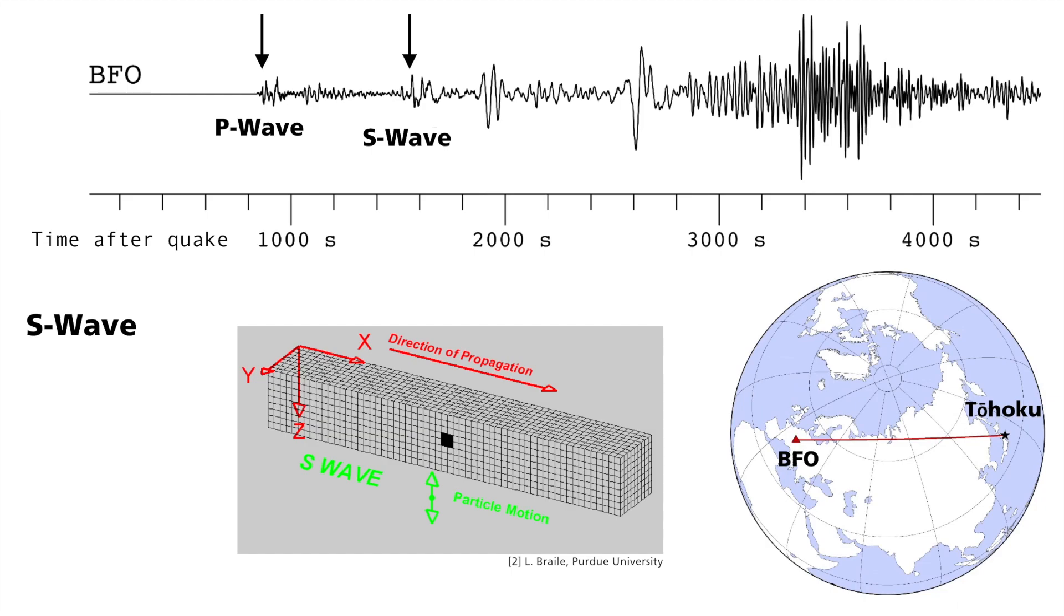You can see this in the seismogram by the larger distances between oscillations. This means that S waves have a lower frequency than P waves. Surface waves are the last to arrive. They have larger amplitudes than both types of body waves, P and S waves, and travel along the earth's surface.